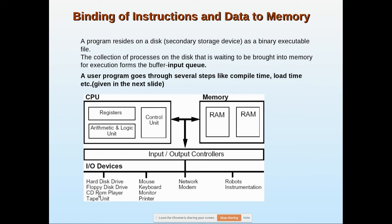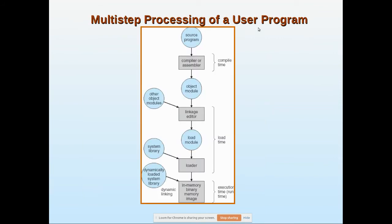When a user starts opening files from secondary storage, the collection of processes on disk waiting to be brought into main memory for execution is called the input queue. They are opened in a temporary buffer and then brought to main memory — that temporary buffer is the input queue. Before execution, the program resides on disk as a binary executable file, and after that it is loaded into RAM. Once loaded, it goes through several steps like compile time and load time.